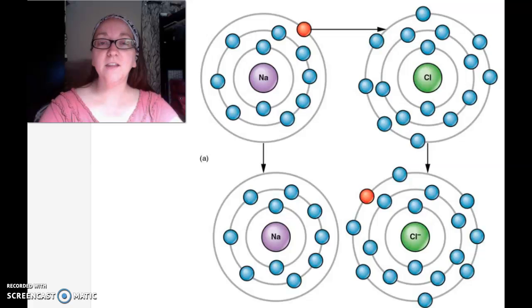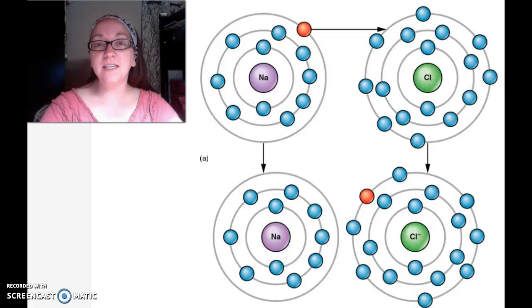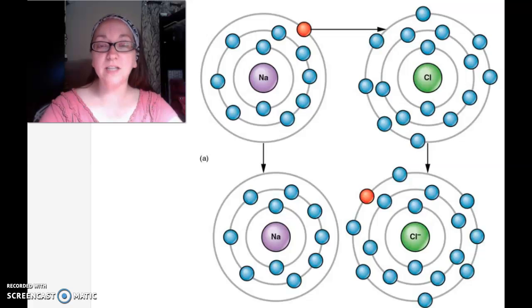The reason that bonds occur between two different atoms all goes back to their electrons. The sharing or giving and taking of electrons is what creates a bond between those two atoms.